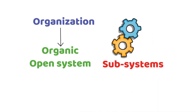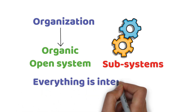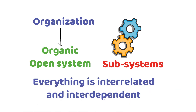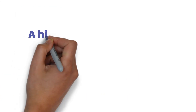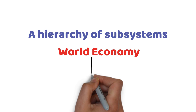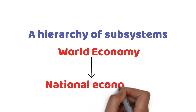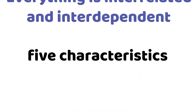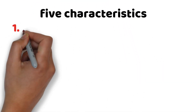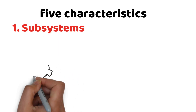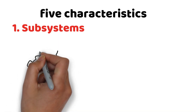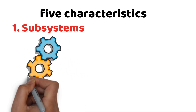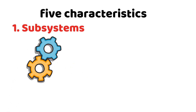This approach views the organization as an organic and open system composed of interacting and interdependent parts called subsystems. It is based on the overview that everything is interrelated and interdependent. One of its most important characteristics is that it is composed of a hierarchy of subsystems. For example, if the world economy is a system, various national economies are subsystems. Each organization is a system made up of a combination of many interrelated subsystems.